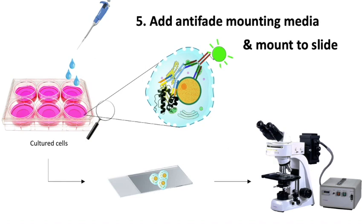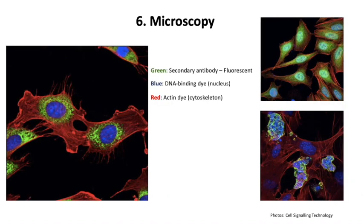We can then go to the fluorescent microscope and observe the localization of our protein. Here are some example pictures from a website that sells secondary antibodies. In the larger picture on the left we see a secondary antibody conjugated to a green fluorescent label, accompanied by other dyes that help you navigate through the cell. The cell nucleus is marked in blue and the actin filaments in red. We can nicely see that the protein of interest is located in structures surrounding the nucleus but is not going inside.